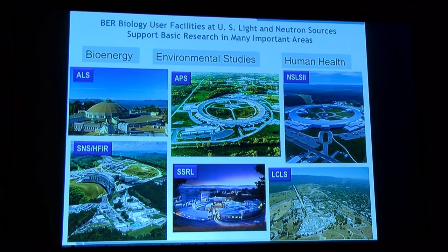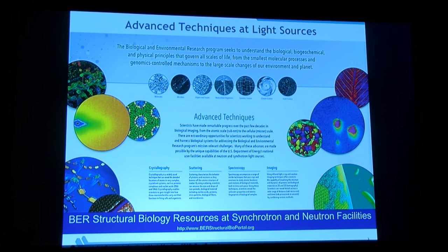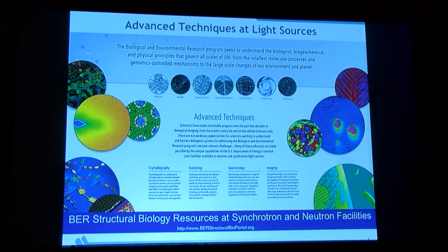We also have the Spallation Neutron Source and High Flux Isotope Reactor at Oak Ridge National Laboratory, the Stanford Synchrotron Radiation Light Source at SLAC, and the Linac Coherent Light Source at SLAC. These facilities are run similarly to EMSL or JGI — you can send in an application and get access.